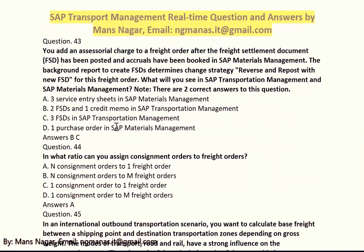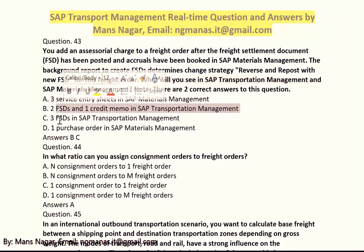You add a special charge to a freight order after the freight settlement document (FST) has been posted and the accruals have been booked in SAP Materials Management. The background report determines a charge strategy to reverse and repost with a new FST for this freight order. The answer is B and C: one FST which is the freight settlement document and one credit memo in SAP Transport Management, and C is another freight settlement document in SAP Transport Management.